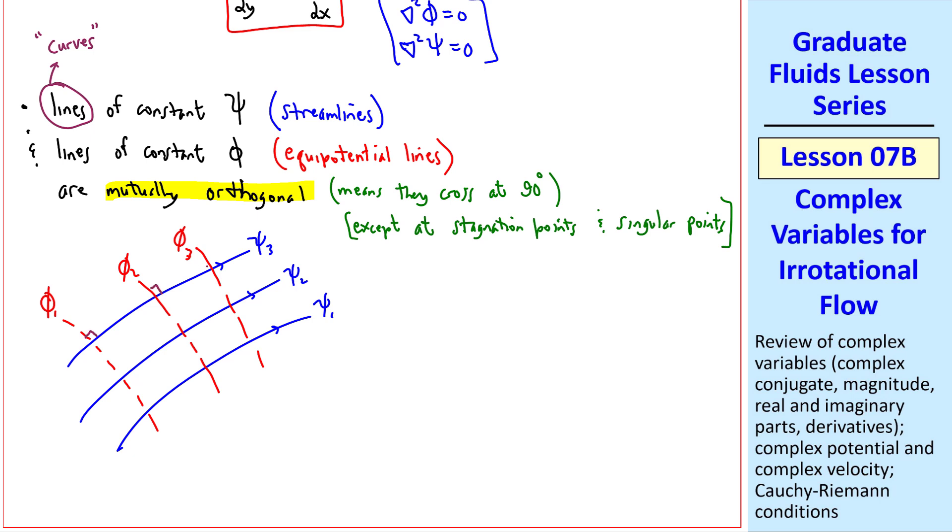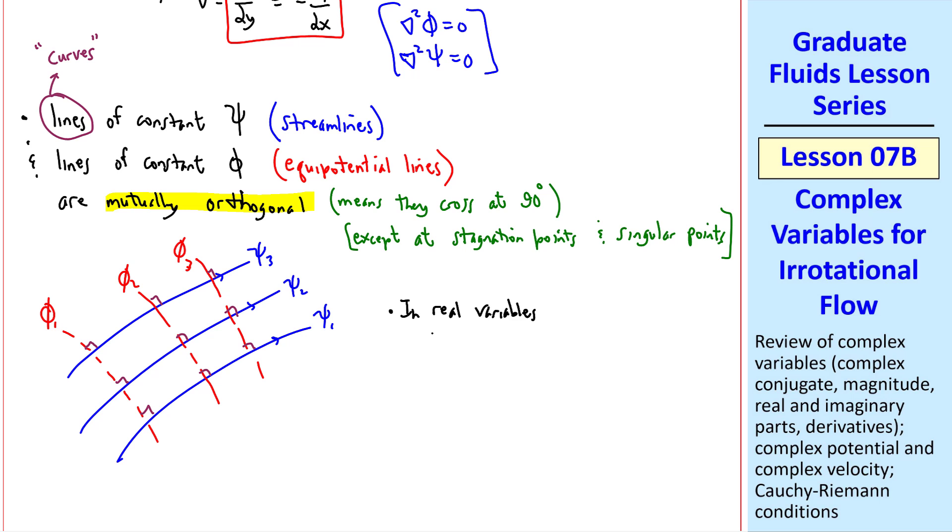Mutual orthogonality means that everywhere that these intersect is a 90 degree right angle. In real variables, as I mentioned before, we can work with either phi or psi and get the same flow field. In complex variables, we combine phi and psi and solve them together.